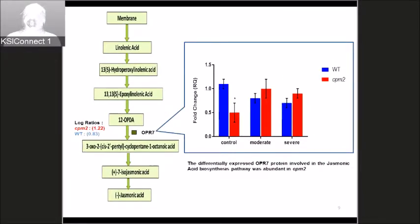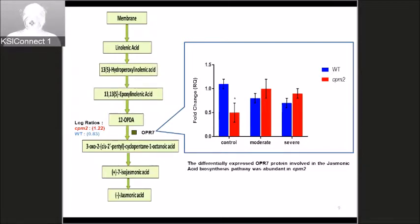The next subsequent protein in this pathway is OPS7. We found that the stress-to-control log ratio for CPM2 was 1.22, while in the wild type it was 0.83 — so OPS7 was more abundant in CPM2 compared to the wild type. qRT-PCR analysis showed that the transcripts were not regulated under drought.